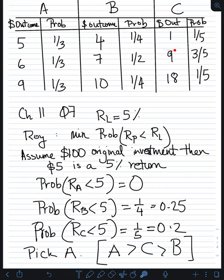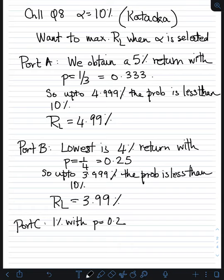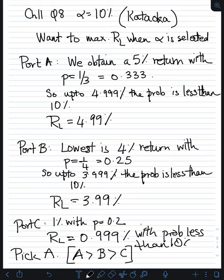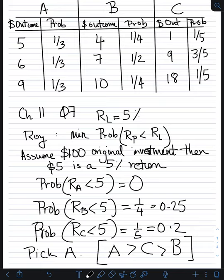For portfolio C, the lowest return is 1% with probability one-fifth (0.2), so we can go up to 0.999% with a probability less than 10%. That gives RL_C = 0.99%. Now we have the lower bounds for all three portfolios and we want to pick the optimal one. We pick portfolio A because it has the highest lower bound — the highest RL we can get. The order of choices is A first, then B, then C. So we pick portfolio A using Karaoka, and we also picked portfolio A using Roy.